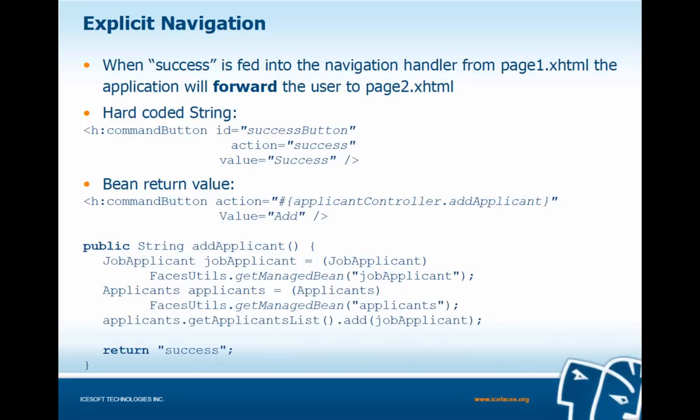For explicit navigation to take place, when 'success' is fed into the navigation handler from page1, the application will forward the user to page2.xhtml. This can be done in one of two ways. The first is a hard-coded string — an H command button whose action attribute has a hard-coded value of 'success', which corresponds to our from-outcome.